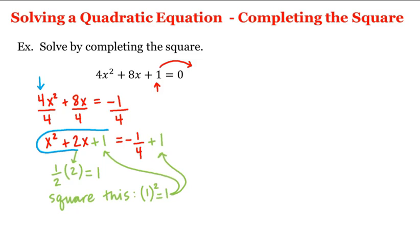And now the left hand side is a perfect square. It is x plus 1 quantity squared. And we've completed the square on the left. And this is equal to negative 1 fourth plus 1, which is 3 fourths.